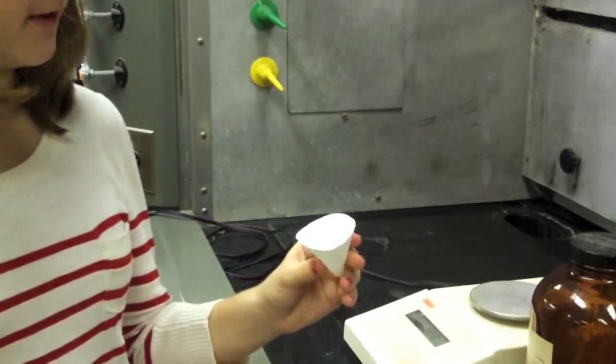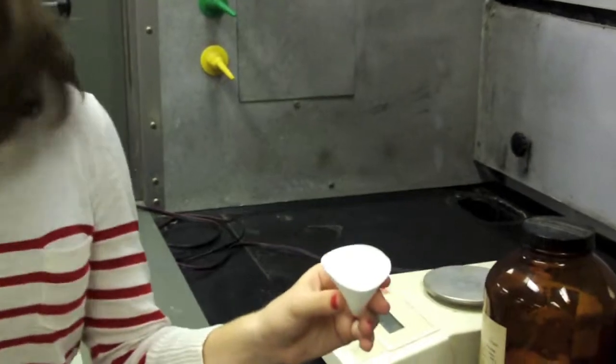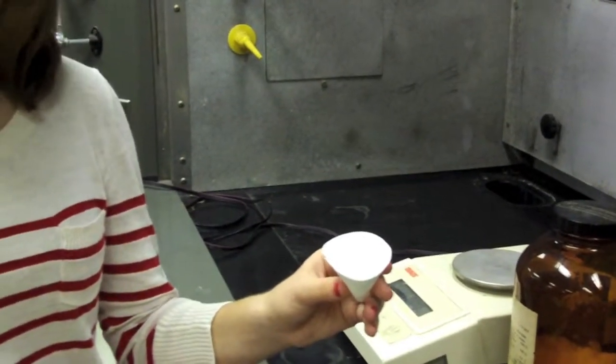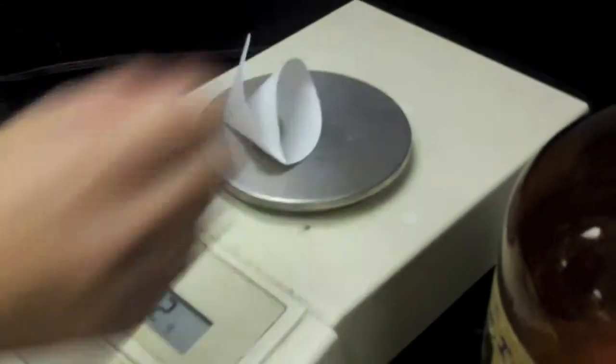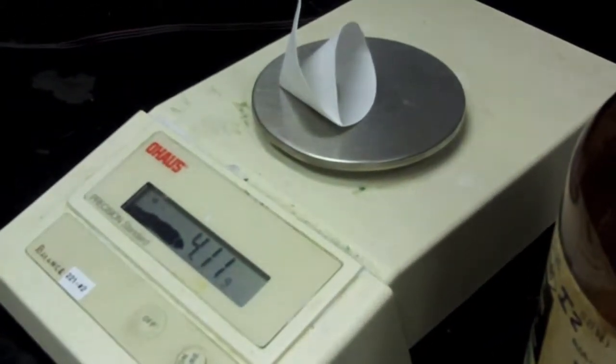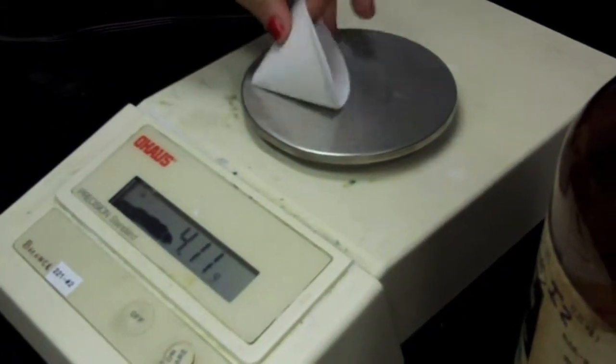After you waited for the filter paper and the solid to dry, you can take it out of the funnel and the beaker and weigh it. Again, make sure it's at 0.00 grams. Set it on. The mass of the paper plus the solid is 4.11 grams.